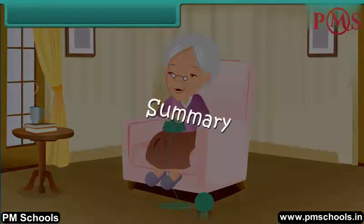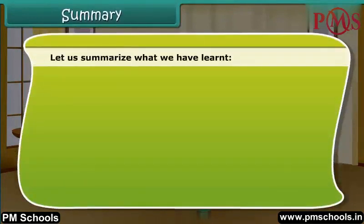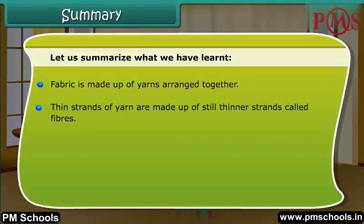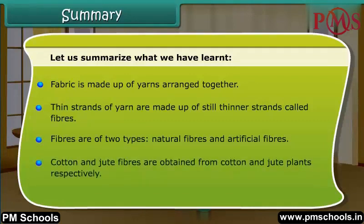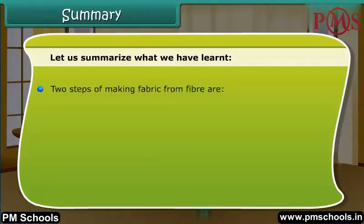Let us summarize what we have learnt. Fabric is made up of yarns arranged together. Thin strands of yarn are made up of still thinner strands called fibers. Fibers are of two types: natural fibers and artificial fibers. Cotton and jute fibers are obtained from cotton and jute plants respectively. Two steps of making fabric from fiber are: one, making of yarn from fiber; two, making of fabric from yarn.